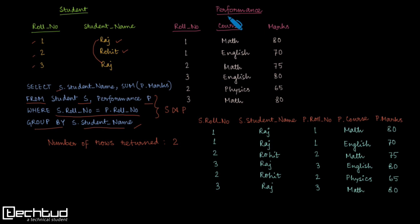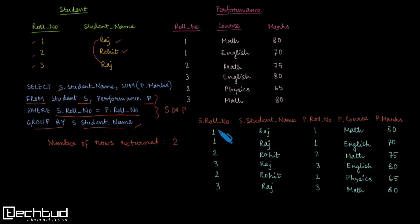The result of the natural join keeps the same ordering as the Performance table. From the Student table we get roll number and student name, and from the Performance table we get roll number, course, and marks. We ensure that for each row the roll number from the Student table and the roll number from the Performance table are the same.